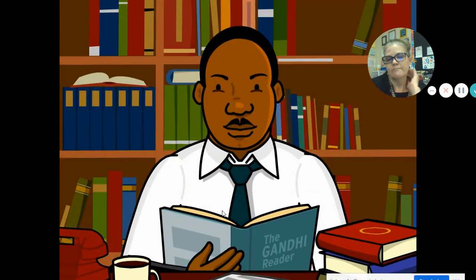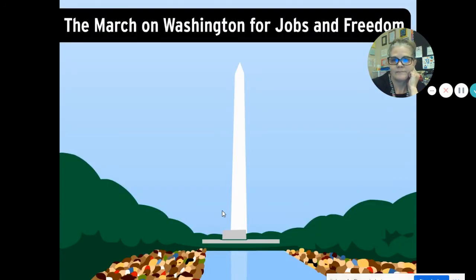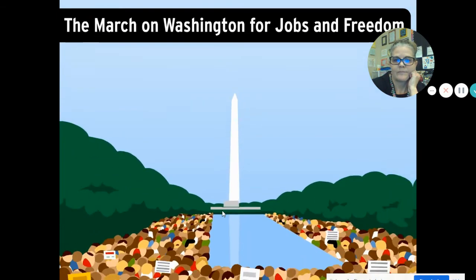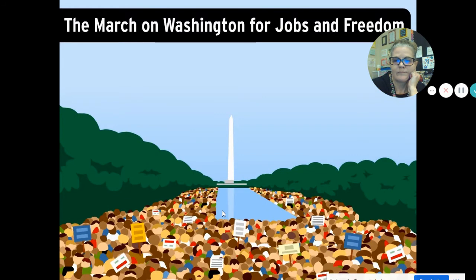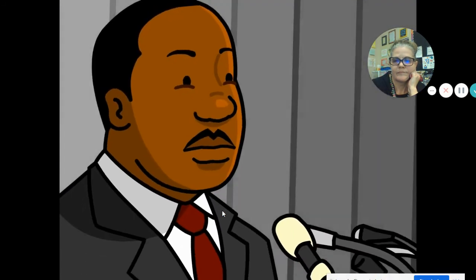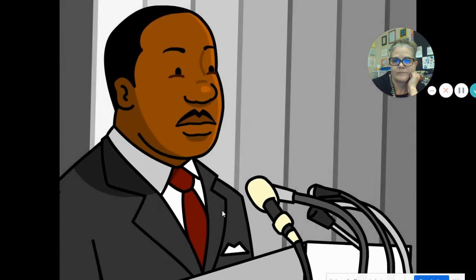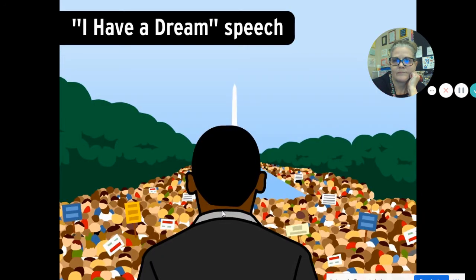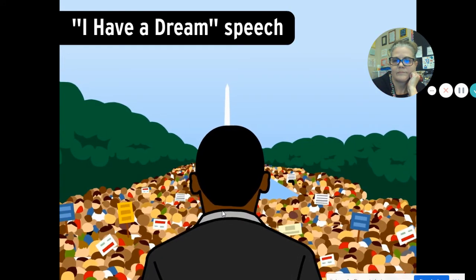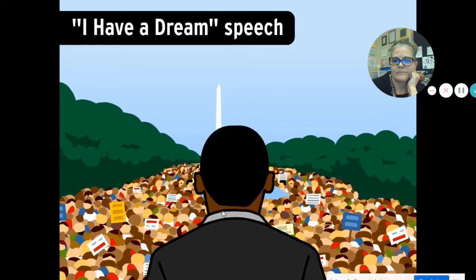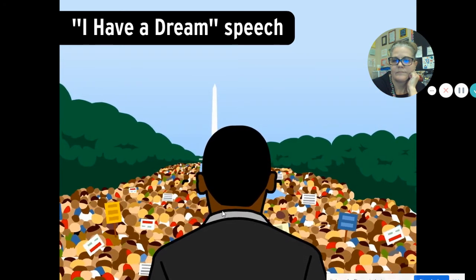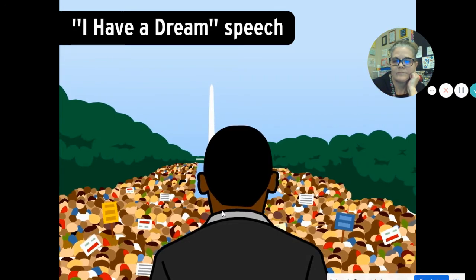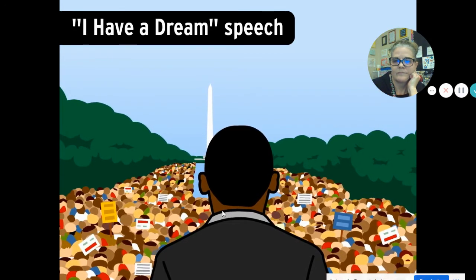Over the next decade, King led protests and marches all over the country. The biggest was the March on Washington for Jobs and Freedom in 1963. Hundreds of thousands of people gathered in the nation's capital to support civil rights. It was there that Dr. King delivered his momentous I Have a Dream speech: 'One day right now in Alabama, little black boys and black girls will be able to join hands with little white boys and white girls as sisters and brothers. I have a dream today!'